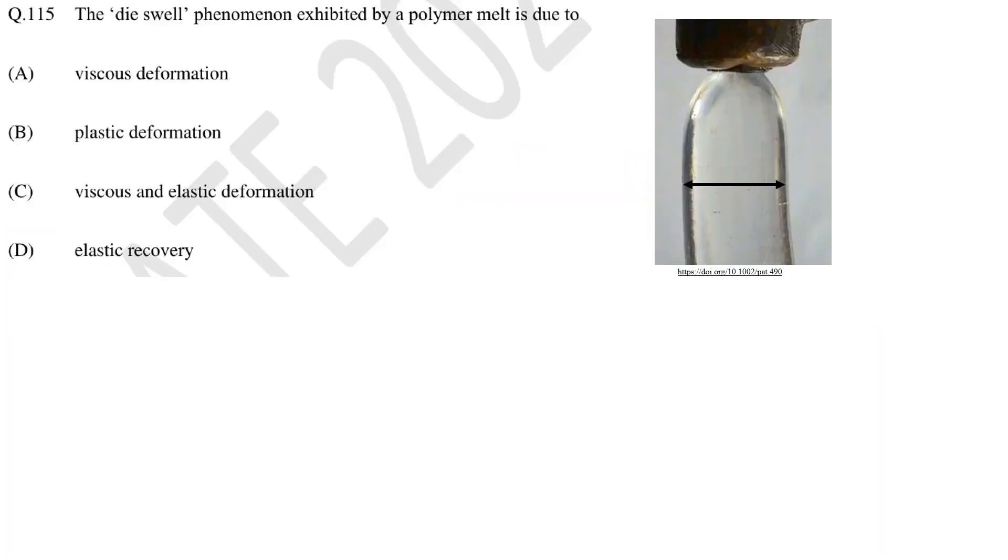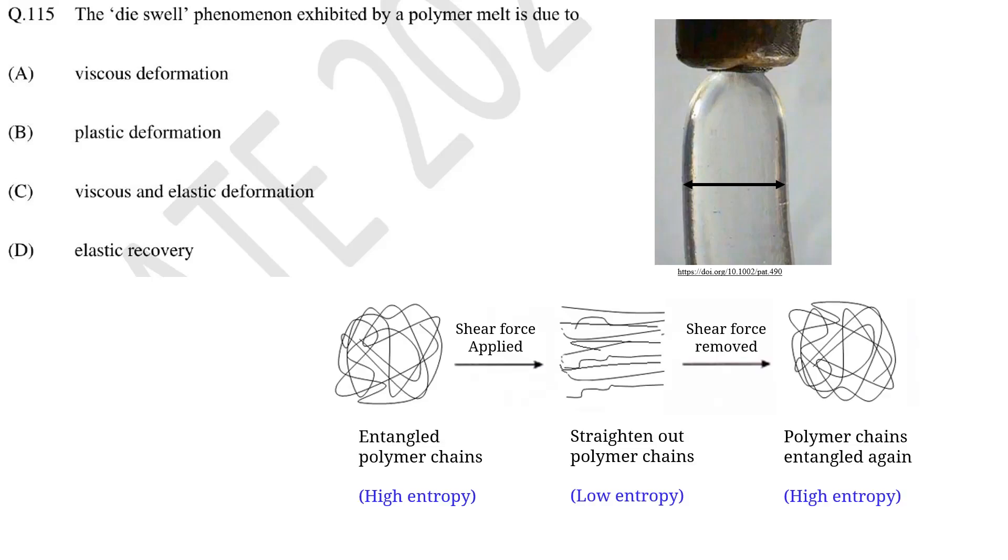In this question you need to answer what is the reason for polymeric materials to show die swell behavior. So when a force is applied on a polymer melt to flow through a die opening the polymeric chains start to deform and orient in force direction. When force is removed chain again go back to initial shape. This behavior of polymer is called stress relaxation and stress relaxation occurs mainly due to elastic deformation of polymer as only elastic deformation is recoverable. Viscous deformation is permanent deformation and it is dissipated as heat. So the correct answer is D.